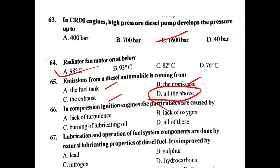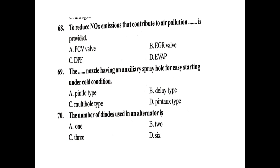In compression ignition engines, particulates are caused by lack of turbulence, lack of oxygen, and burning of lubrication oil. Lubrication of fuel system components is done by the natural lubricating properties of diesel fuel. To reduce nitrous oxide emissions that contribute to air pollution, an EGR valve is provided.